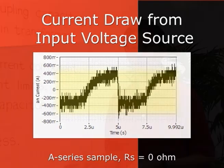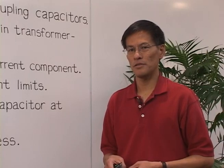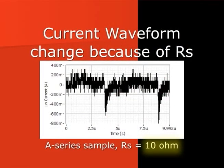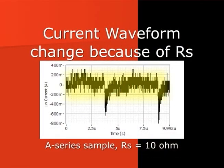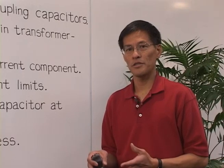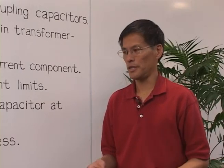The current waveform changes significantly when the source resistance is measurable. In this case this is 10 ohms, and the waveform here is much less distinctive than the prior waveform. In fact, it's hard to see when the converter itself is drawing current from the external supply in this waveform.